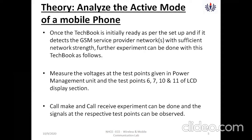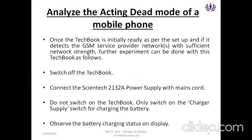We need to measure voltages with respect to these pins. This can be done with a multimeter set in the appropriate mode. One probe is at test point 0.6 and the other probe will be at ground potential. A call make and call receive experiment can be done, and the signals at the respective test points can be observed.